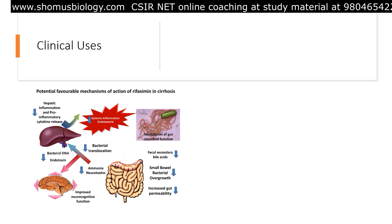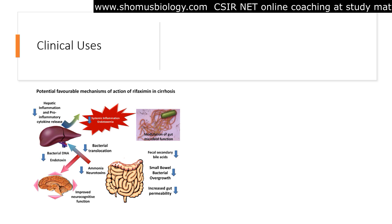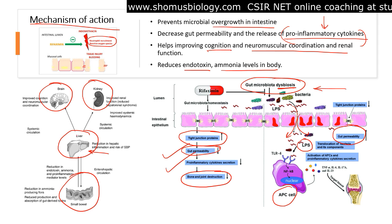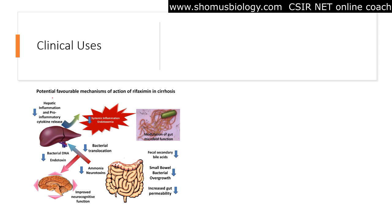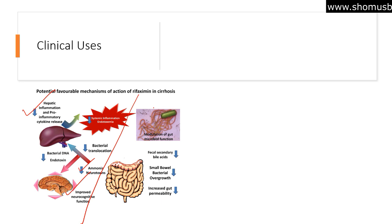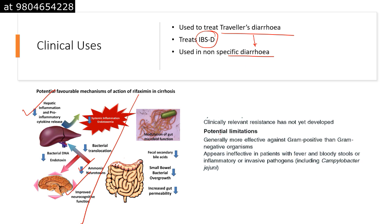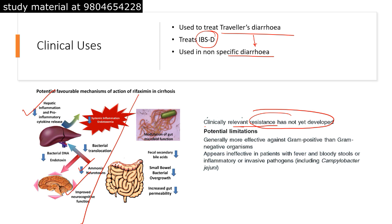Rifaximin is generally not used just as an antibiotic — it helps maintain a healthy kidney, liver, brain, and gut. Its clinical uses include decreasing hepatic pro-inflammatory cytokines, decreasing ammonia concentration, and improving neural cognition. Without rifaximin, small bowel bacterial overgrowth, increased gut permeability, and fecal secondary bile acids are found. With rifaximin, all of these decrease. Clinical uses include treating traveler's diarrhea, IBS-D, and non-specific diarrhea. Notably, no clinically relevant resistance has been found yet.